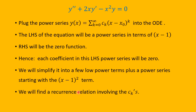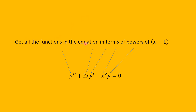Once we have the recurrence relation, we can use the initial conditions to find all the cₖ's computationally and plot the solution. We need all functions in the equation expressed as power series centered at 1: a series for y'', one for 2x, one for y', one for x², and one for y. On the right-hand side, the zero function has all coefficients equal to zero.